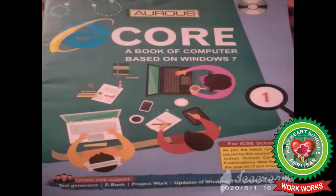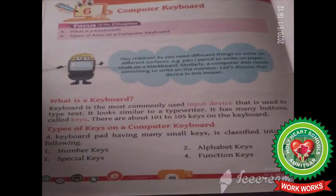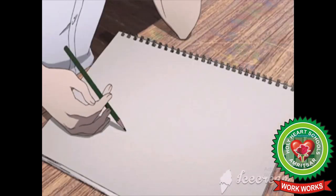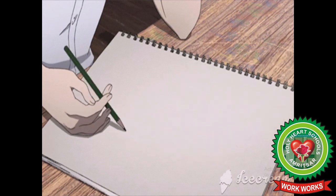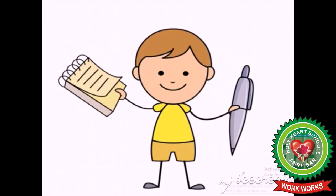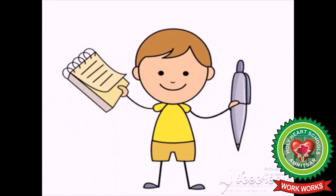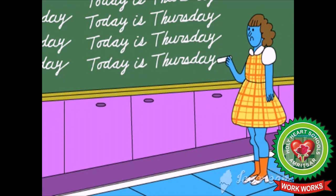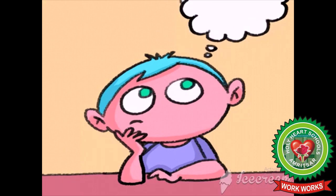Open your computer book page number 46. As you need different things to write on different surfaces — for example, we need a pencil to write on paper or a copy, we need a pen to write on a copy, we need chalk to write on a blackboard. Similarly, a computer also needs something to write on the monitor.